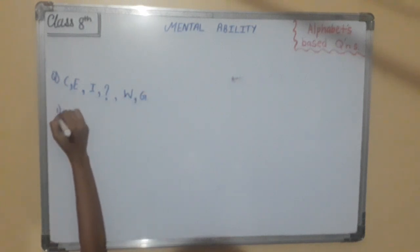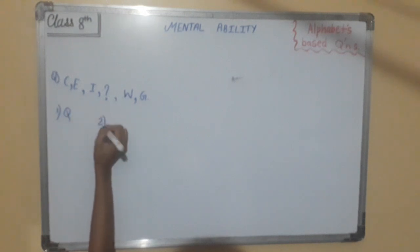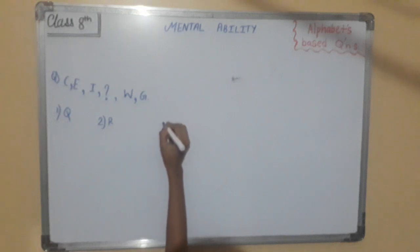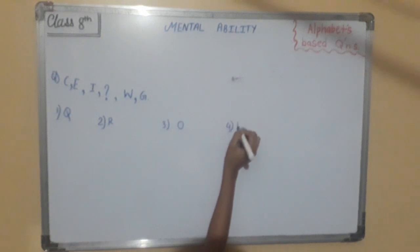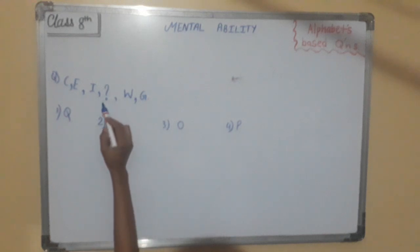First option is Q, second option is R, third option is O, fourth option is P. In this, we have to find the alphabet which is suitable here and which will come at this question mark place.